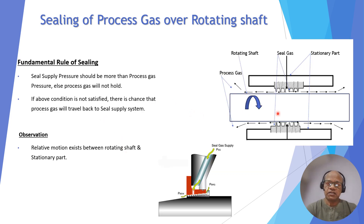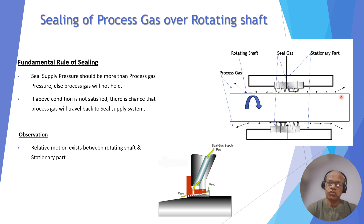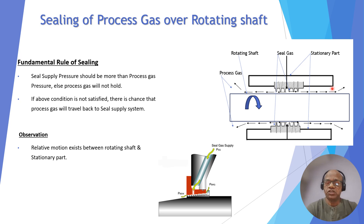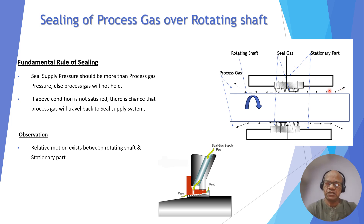To seal the arrangement, you supply high-pressure seal gas. The seal pressure must be higher than both the process side pressure and the vent side pressure — whichever is greater. Sometimes the vent pressure is higher than the process side, such as in low-pressure compressor applications. In other cases, the process side pressure is the governing criterion. You must supply seal gas pressure greater than both values.